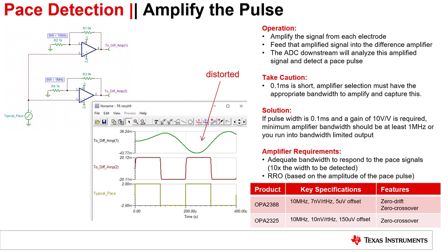For a linear amplifier, we recommend the OPA2325, which offers 10 megahertz of bandwidth. Here is the full circuit showing all of the stages and recommended precision amplifier devices.